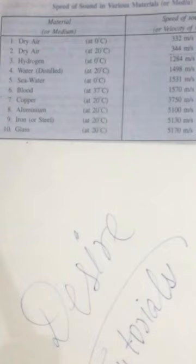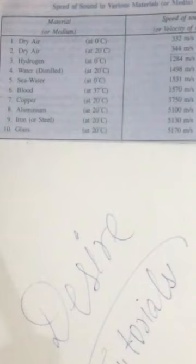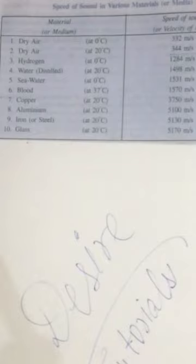In aluminium at 20 degrees Celsius, the speed of sound is 5100 meters per second. In iron or steel at 20 degrees Celsius, it is 5130 meters per second. And for glass at 20 degrees Celsius, the speed of sound is 5170 meters per second.